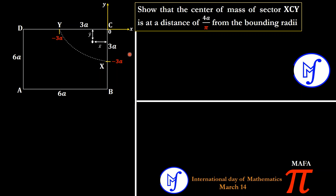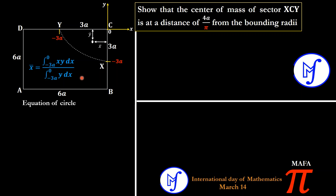We need to prove that both the x and y coordinates of the center of mass equal 4a/π. We are going to use integration to find the centroid, whose coordinates are (x̄, ȳ). The formula for x̄ is the integral from negative 3a to zero of x·y dx, divided by the integral from negative 3a to zero of y dx. The x bounds run from negative 3a to zero because the sector touches the vertical axis at x = 0.